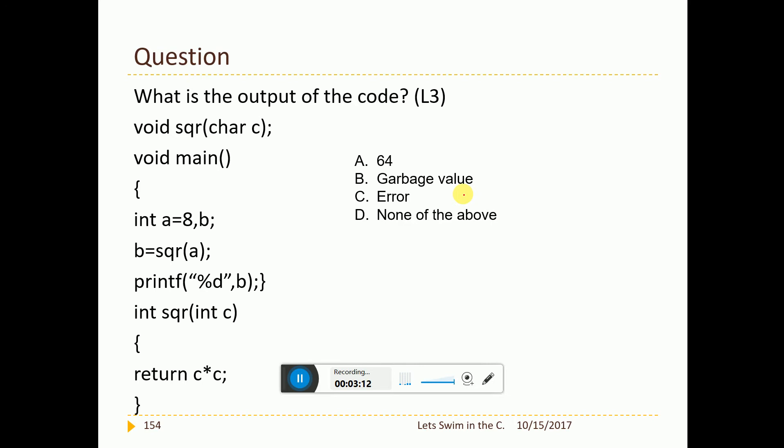Now here void square c, int square int c. Now is it right? The same question but you can see that. How many ways a single question can be tweaked? Now is it right? No. The return type is void here. The return type is int here. They never get matched. Hence this is an error.